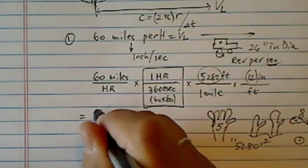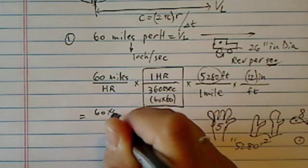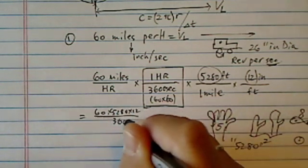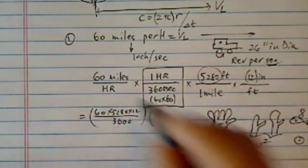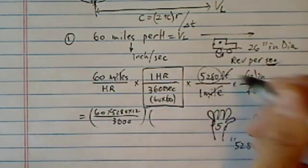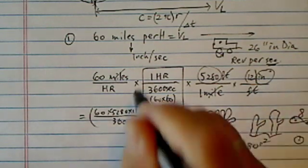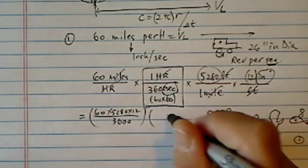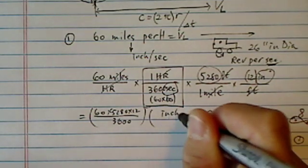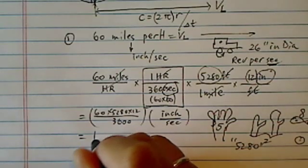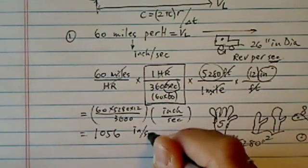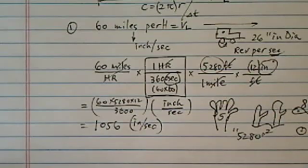So anyway, you convert this whole thing. It's 60 times 5280 times 12 divided by 3600. Then miles cancels out, feet cancels out, inches left alone, hours cancel out, seconds left alone. So we're left with inches per second. This one is 1056 inches per second. That's how fast the truck is moving.